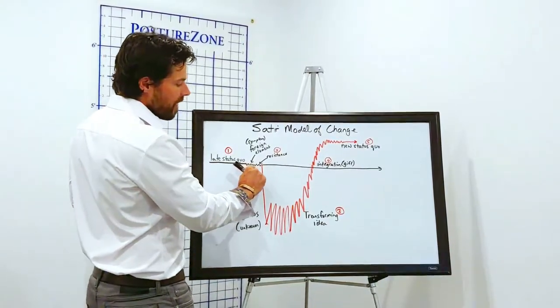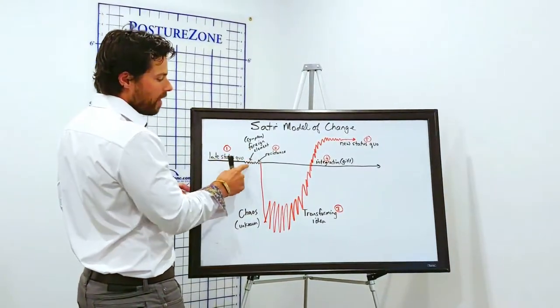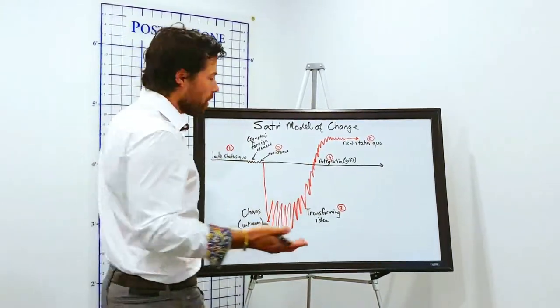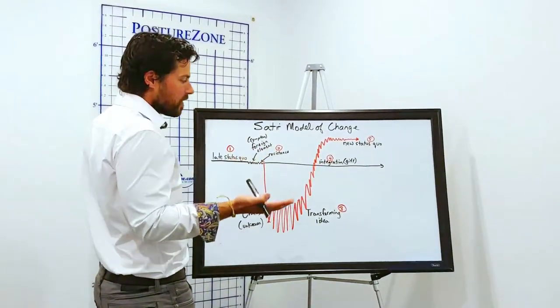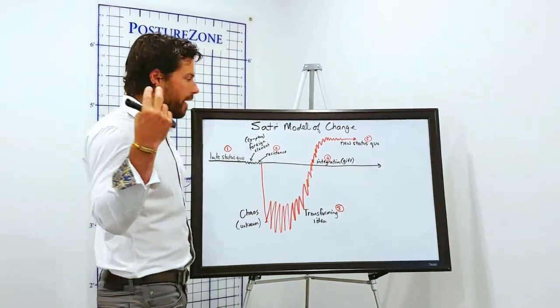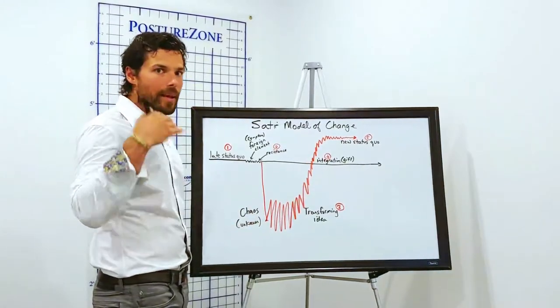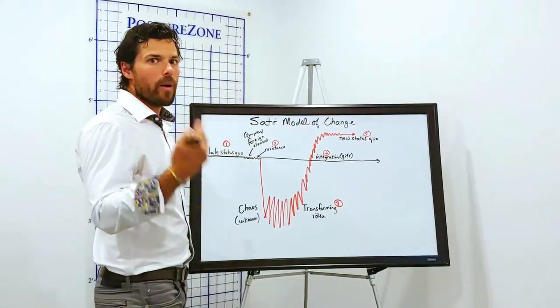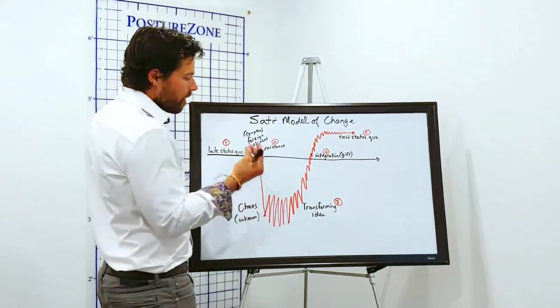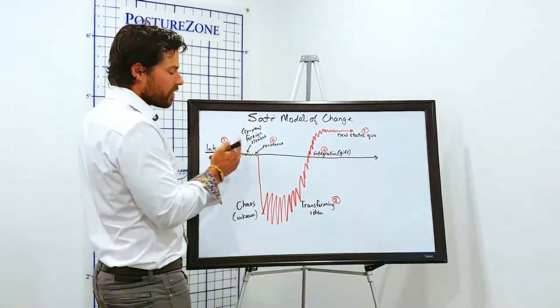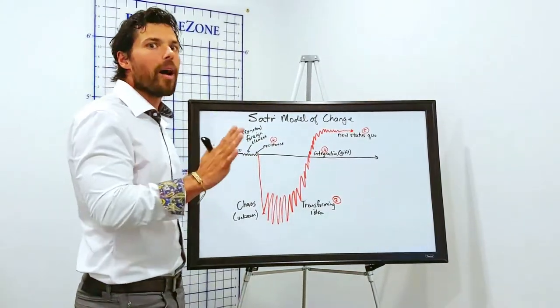And as life as usual, what happens is something comes in to interrupt it, called a foreign element. Something comes in to interrupt life as usual. And for this particular case, we'll use a symptom. Let's say your immune system shuts down. Let's say you have pain. Let's say something occurs that interrupts your ordinary flow of life. In that moment that it arises, you're going to instantly call resistance.